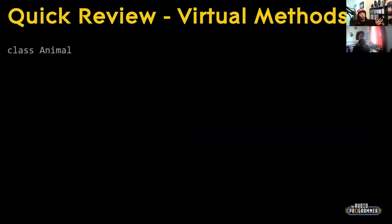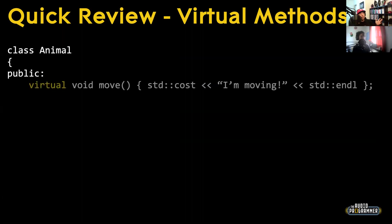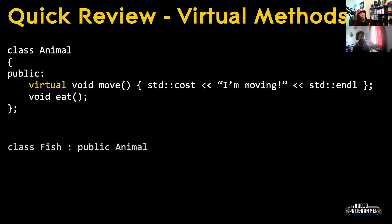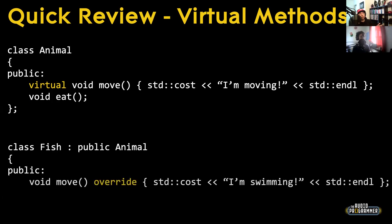Let's start with a quick review of our last lesson on virtual methods. We have a class called Animal with a virtual method called void move, which had some implementation in the base class where we consoled out 'I'm moving.' Then we have a derived class called Fish that inherits Animal, and Fish had its own implementation of move — 'I'm swimming.'